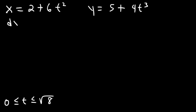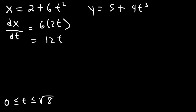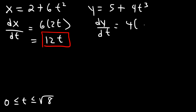The first thing we need to do is calculate dx/dt and dy/dt. So dx/dt is going to be 6 times 2t, which is 12t. Now let's do the same for dy/dt. The derivative of 5 is 0 and the derivative of t to the third power is 3t squared, so dy/dt is going to be 12t squared.